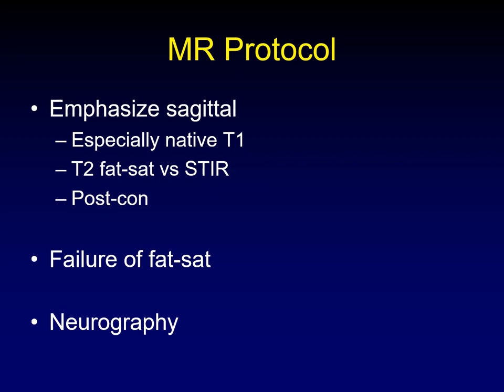We often do both T2 fat sat and STIR, but the key is uniform fat saturation. Post-contrast imaging is very useful, especially in tumor cases, and even in trauma I like to push for it, although sometimes there are reasons not to give contrast. As for neurography, I'm not sure how diagnostically useful it is, though you'll find people who disagree and think neurography is the future of brachial plexus imaging — I encourage you to weigh those opinions for yourselves.